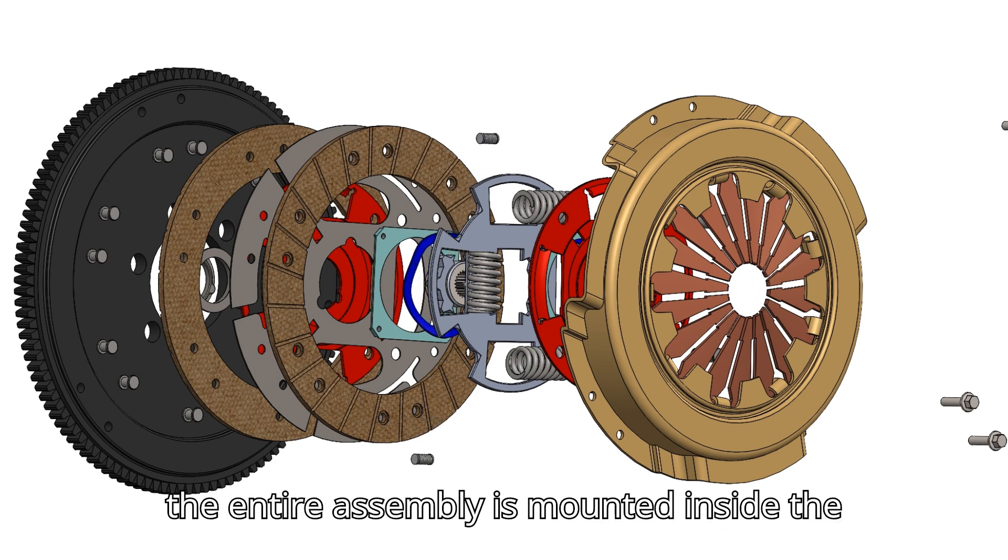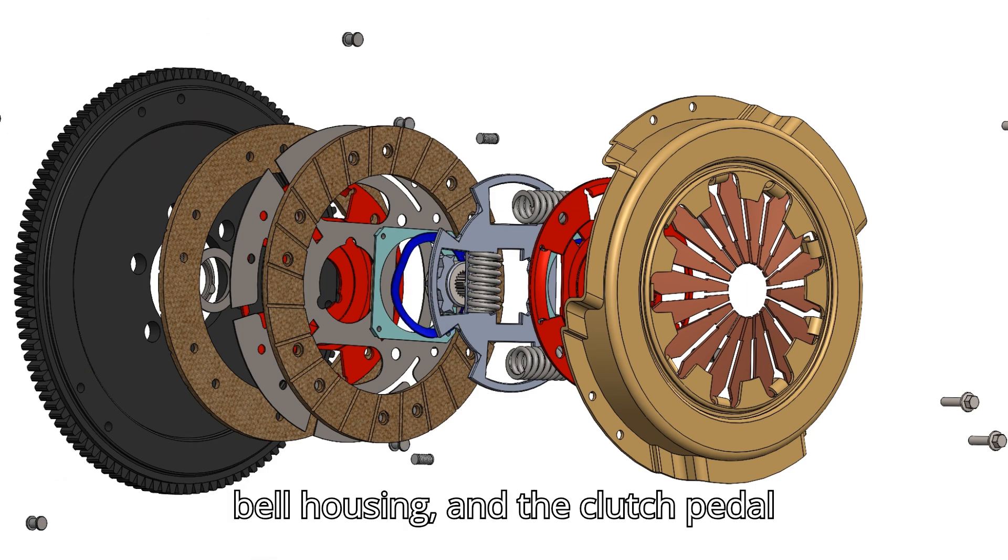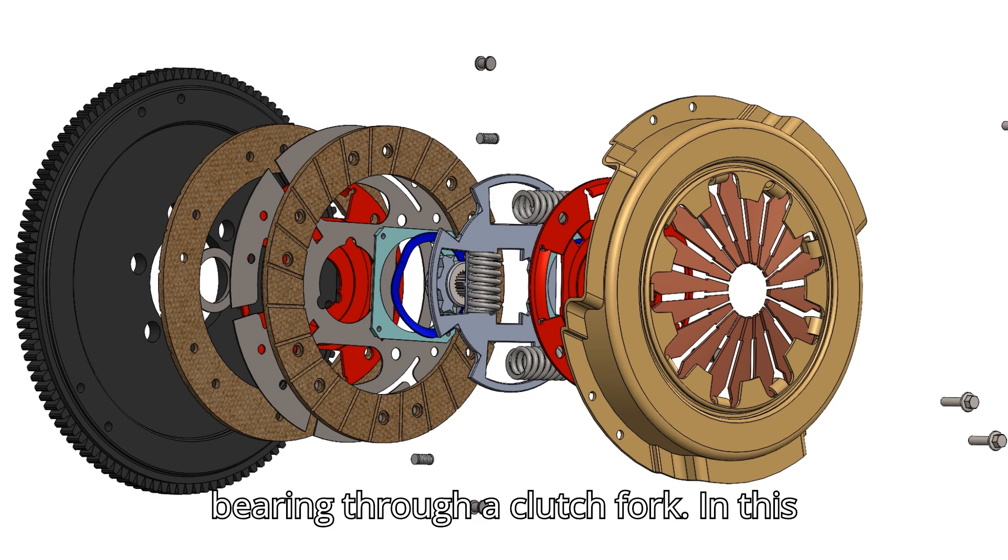Finally, the entire assembly is mounted inside the bell housing, and the clutch pedal controls the movement of the release bearing through a clutch fork.